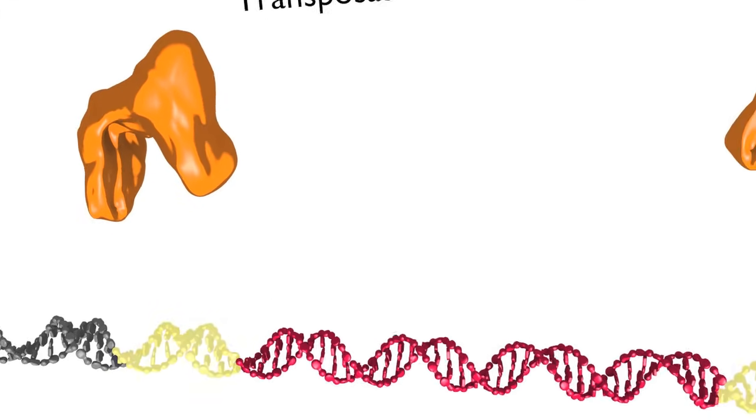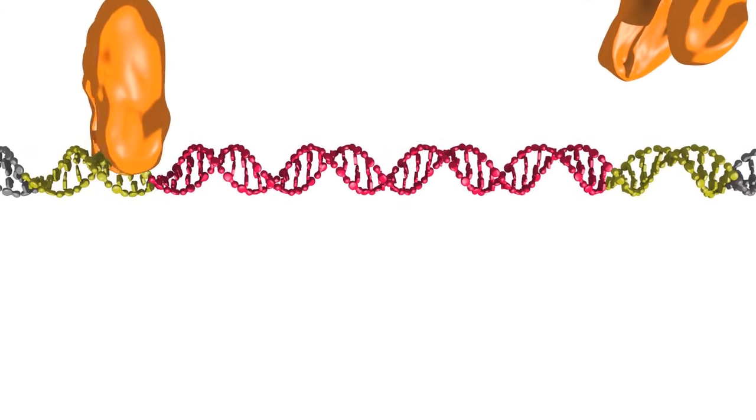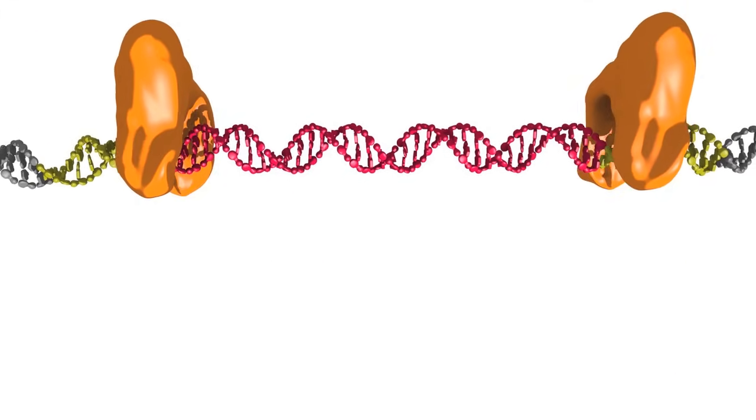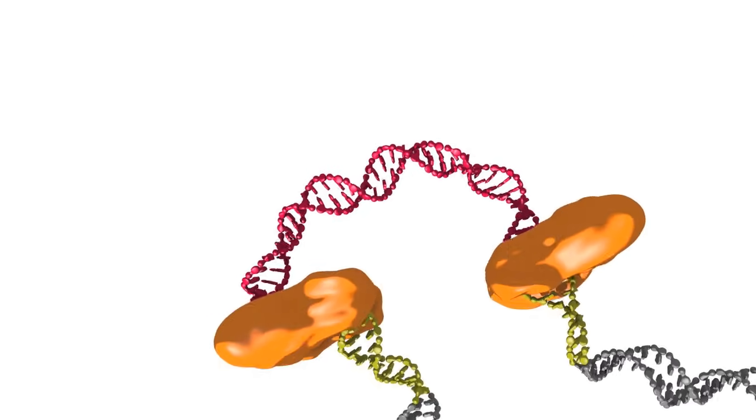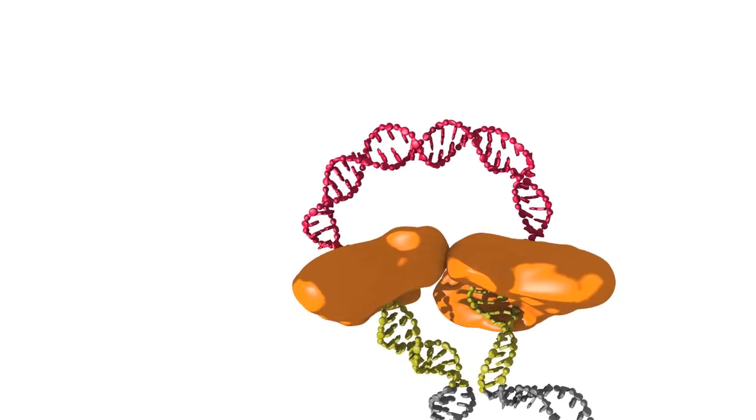Transposition begins when the transposase binds to terminal inverted repeat sequences at each end of the transposon. The transposase molecules then pair, bringing together the transposon ends and activating the transposase activity.